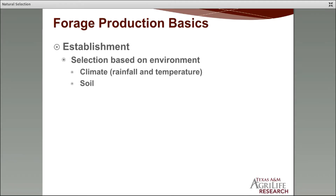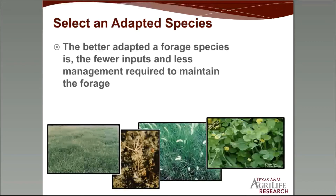Now we'll move into establishment. Selection of forage is based on the environment — climate and soil influence our environment. You want to select an adapted species to the climate and the soil, because the better adapted a forage species is, the fewer inputs you have to put onto that pasture and the less management will be required to maintain the forage over time.